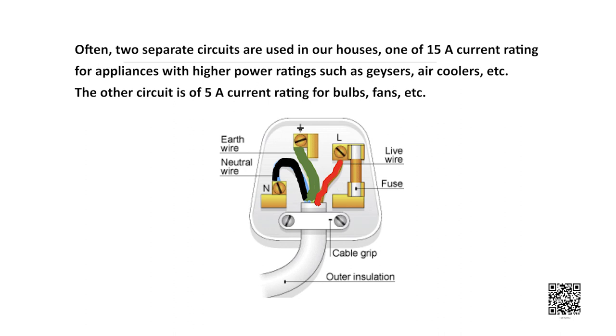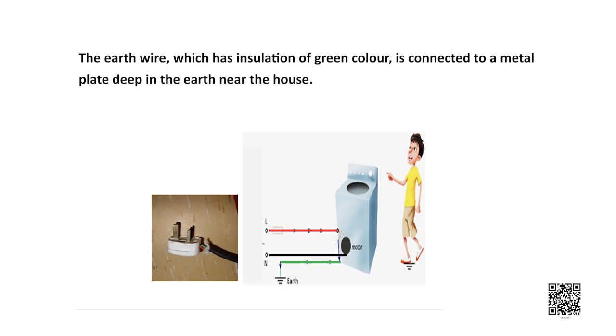Often two separate circuits are used in our houses. One with 15 ampere current rating for appliances with higher power ratings such as geysers, air coolers, etc. And the other circuit is 5 ampere current rating for appliances like fans, bulbs, etc. The earth wire which has an insulation of green color is actually connected to a metallic plate which is buried deep inside the earth near the house.